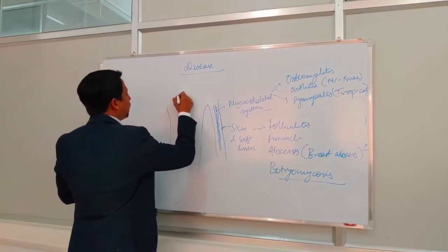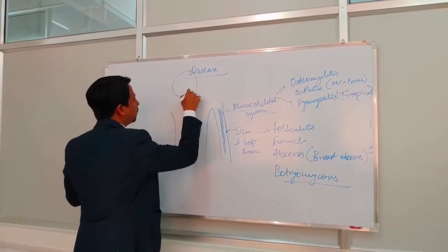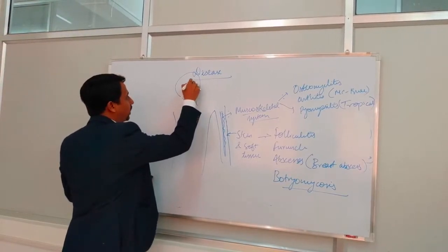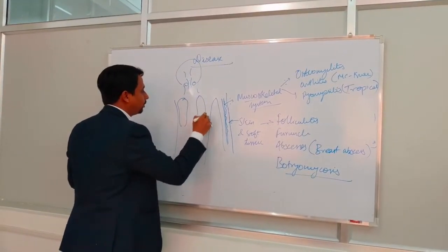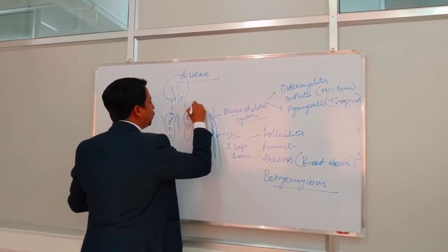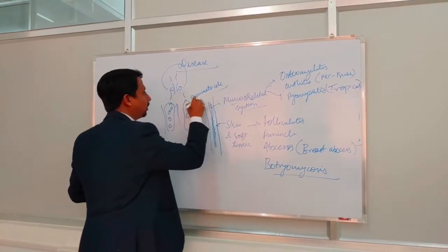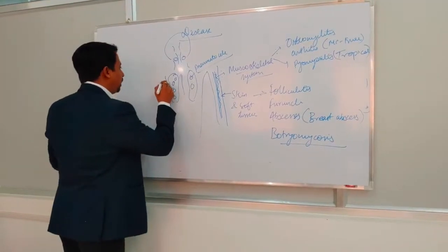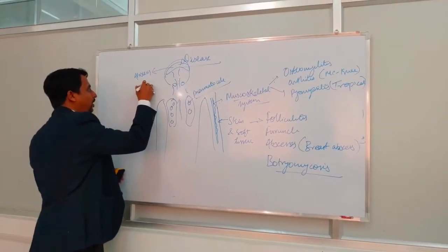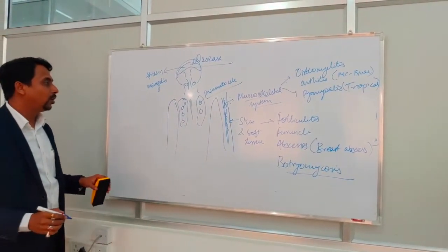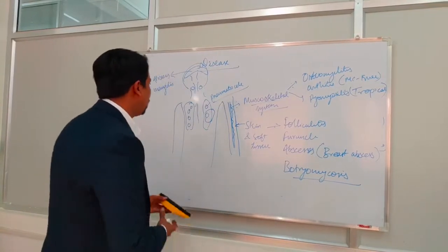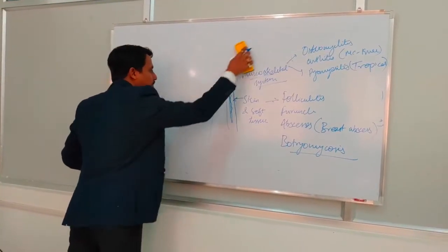In the respiratory system, Staphylococcus causes tonsillitis, pharyngitis, sinusitis, bronchopneumonia, and an important disease in neonates — pneumatocele. In the CNS, it causes abscess and meningitis. In the endovascular system, it causes bacteremia, pyemia, septicemia, and endocarditis.